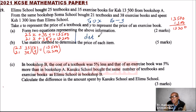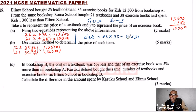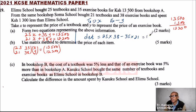That is: 25 multiplied by 38, minus 35 multiplied by 21. Use your calculator. You get 25 × 38 minus 35 × 21, which gives 215. So the determinant is 215.